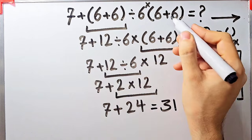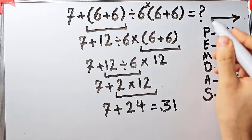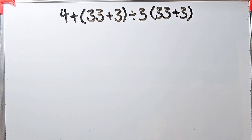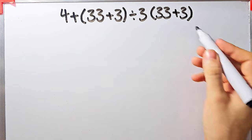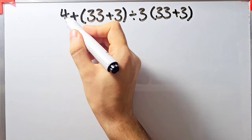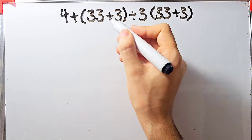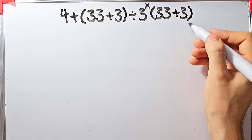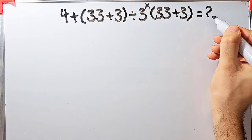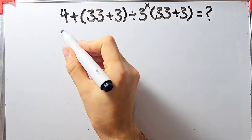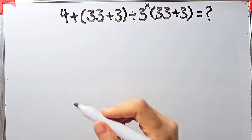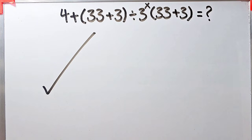If you don't pay attention to the PEMDAS rule you get the wrong answer. If you want the right answer you must follow the PEMDAS rule. Now tell me in the comments: what is the answer of this question — 4 plus (33 + 3), divided by 3, then times (33 + 3)? Please tell me in the comments. Thanks for watching! Please subscribe to the channel and leave a comment. Goodbye!